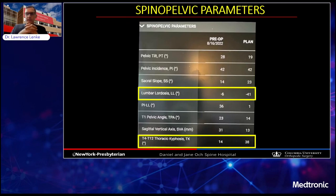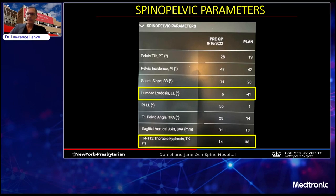Numerically, here is the pre-op and planned sagittal alignment data. Pelvic incidence is not going to change. Sacral slope is going to increase. We want to markedly increase lumbar lordosis from minus 6 to minus 41 degrees to be more aligned with the pelvic incidence. We're going to have a spontaneous increase in thoracic kyphosis above to keep everything harmonized — predicted from 14 to 38 degrees of spontaneous thoracic kyphosis. That's where the predictive modeling comes in, predicting what the ultimate thoracic kyphosis will be after we correct lumbar lordosis to minus 41 degrees.